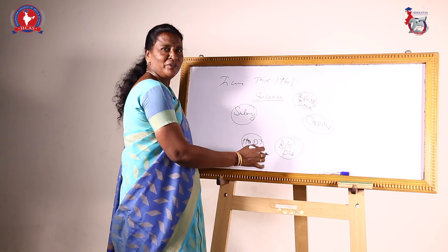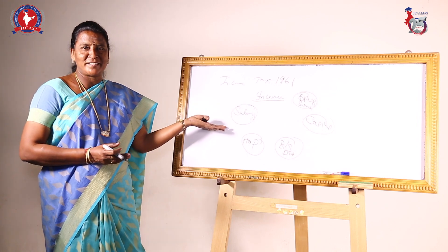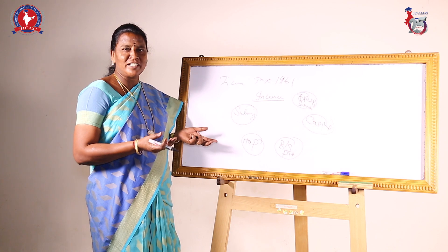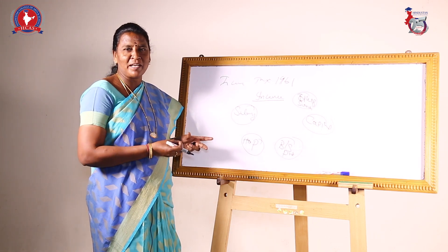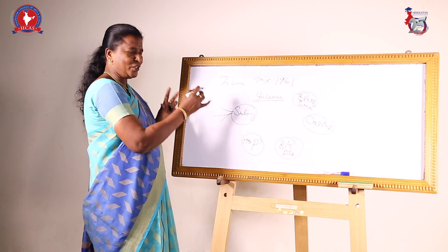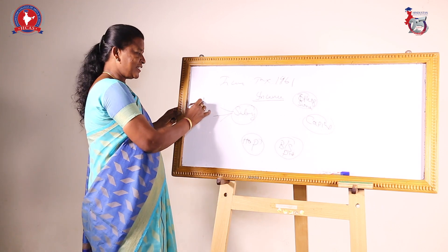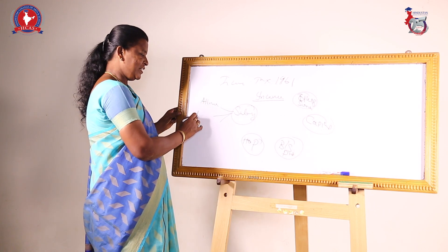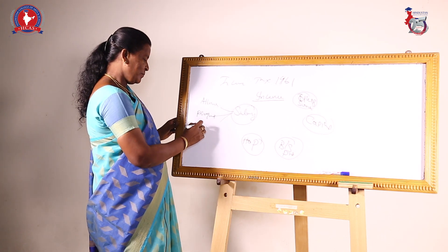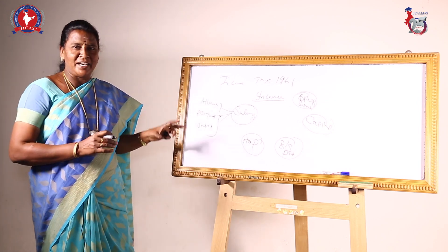All these 5 are considered to be total income. First, I am going to explain what is salary. Suppose you are working in any organization, the amount received from the employer is called salary. Salary has 3 elements: one is allowances, another is perquisites, and the other is profit in lieu of salary.